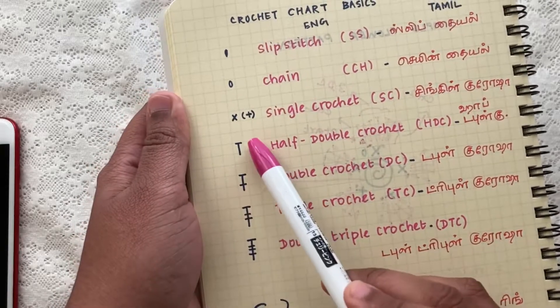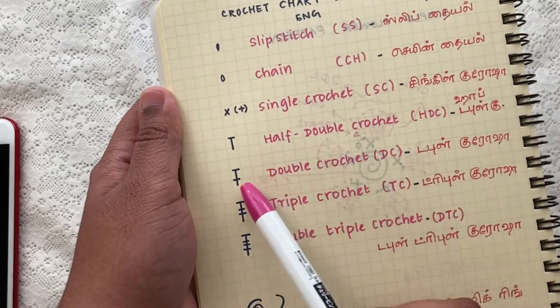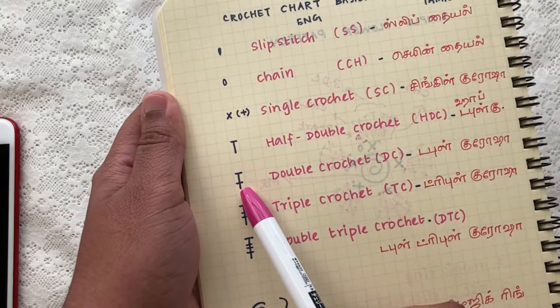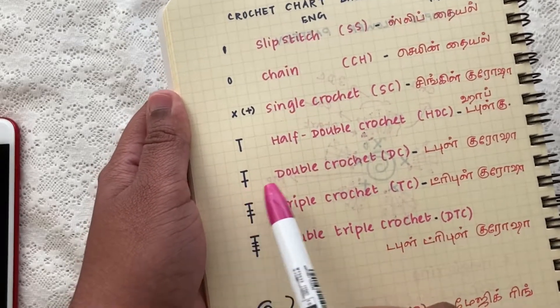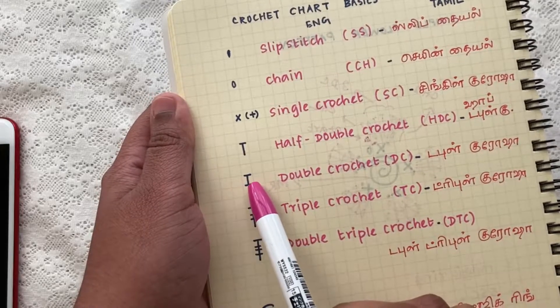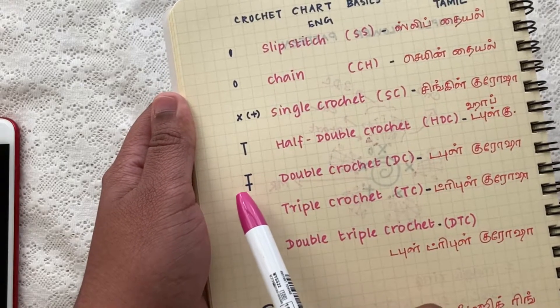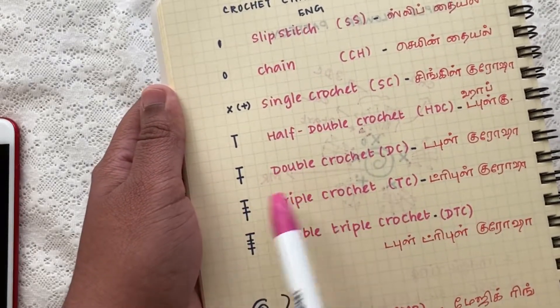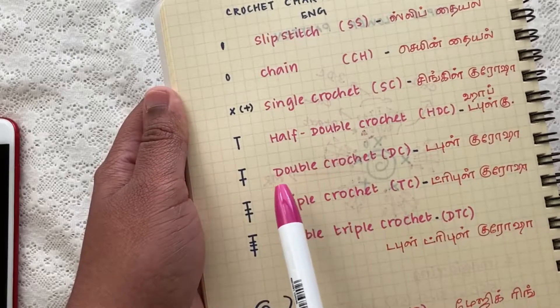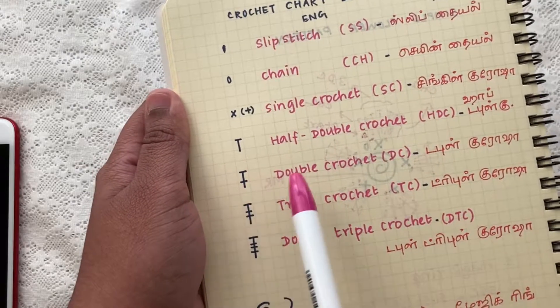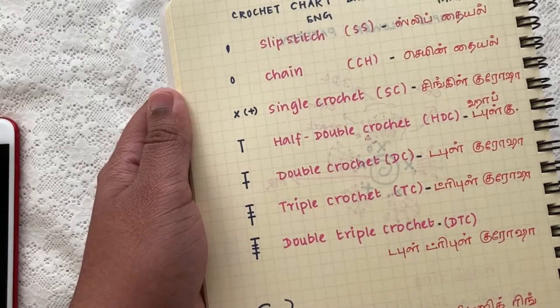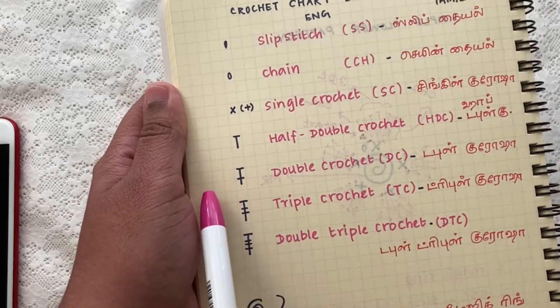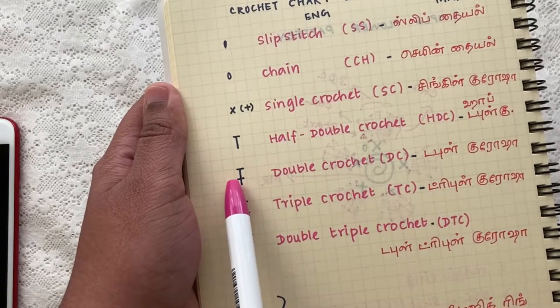We have the T symbol just like half double crochet and a small bar across the vertical line. So this particular bar represents how many pull-throughs are there in a particular crochet stitch. So here for the double crochet we have to do two pull-throughs, that's why we have two bars across the particular stitch symbol.